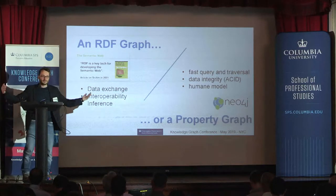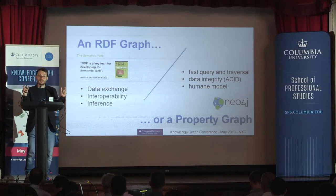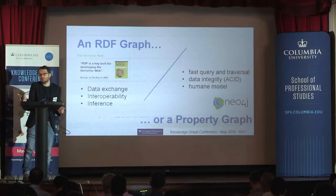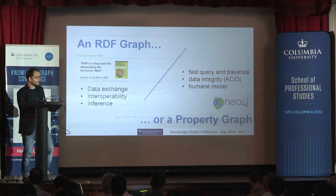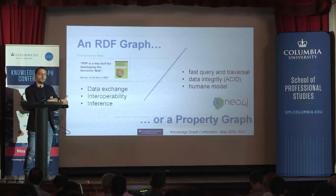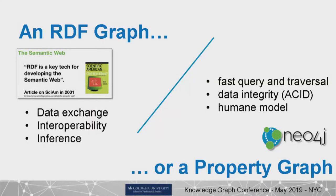Data came from all over the place, and what you want to be able to do is express data down to the smallest fragment. That's why RDF is based on this atomic decomposition of your data in the form of logical statements. On the other hand, the label property graph was created by Neo4j in the early 2000s with a completely different purpose.